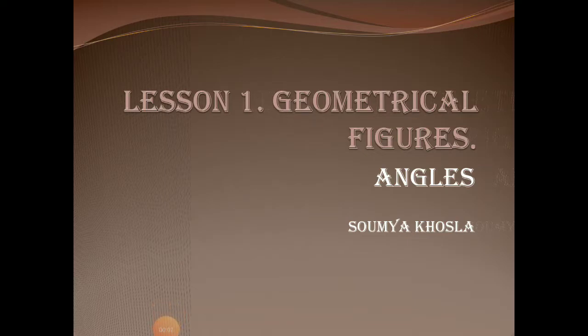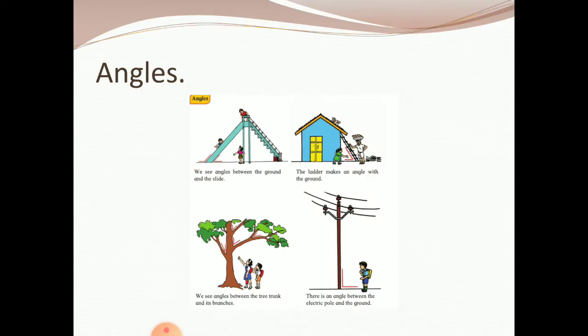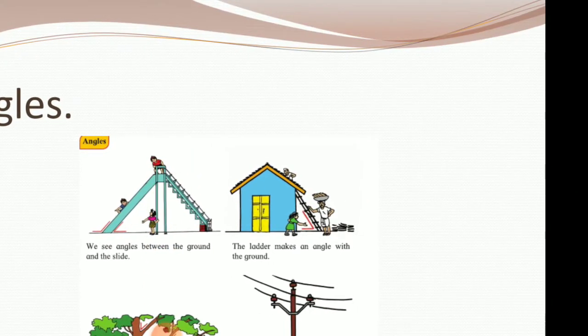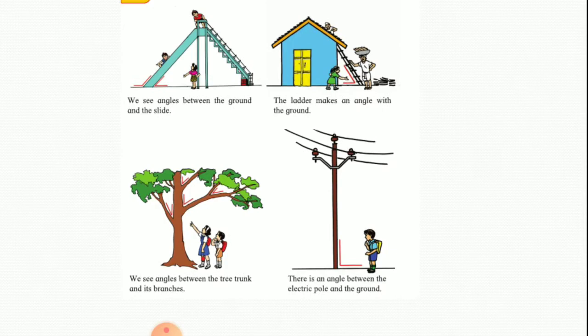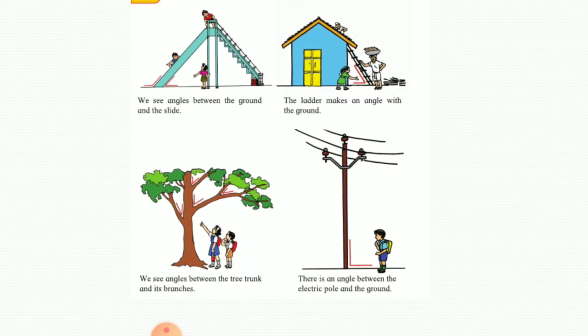Good morning boys, we begin with our first lesson on geometrical figures. We'll focus on angles now. As you can see, there are angles between the ground and the slide. The ladder makes an angle with the ground. We see angles between the tree trunk and its branches. There is an angle between the electric pole and the ground.